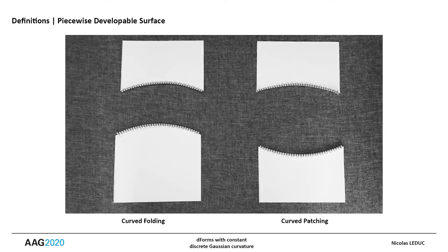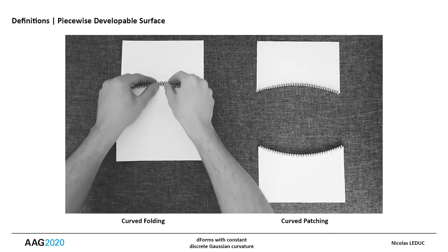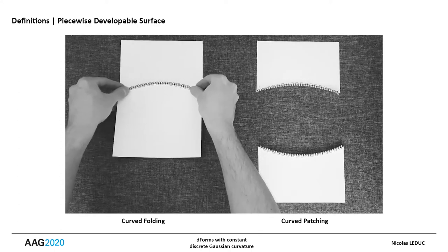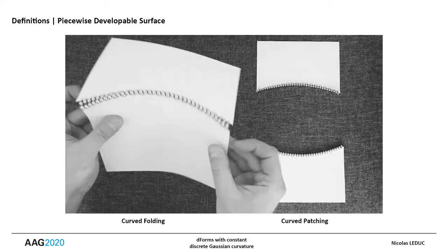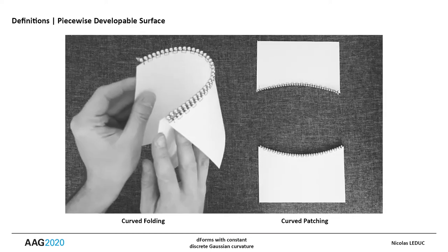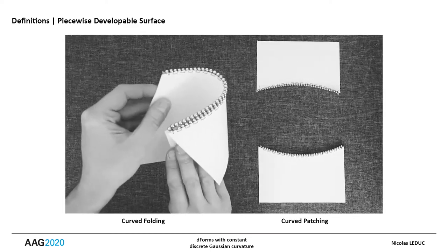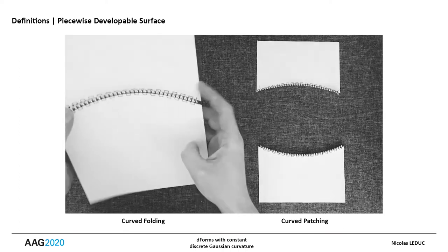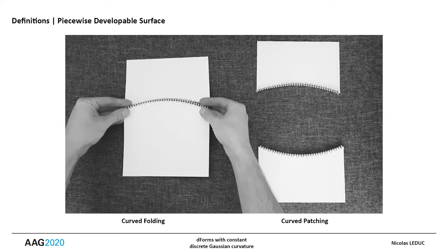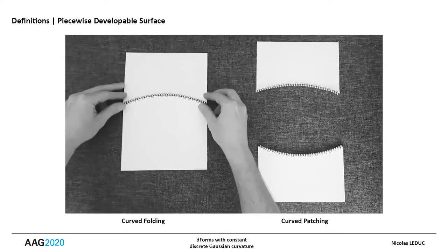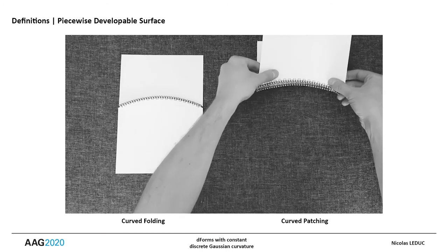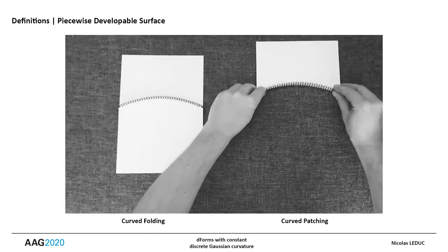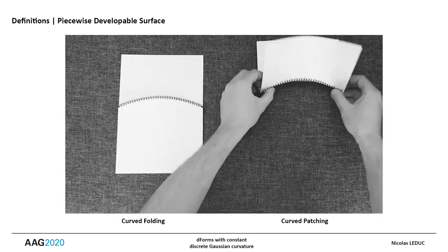The first one assembles two surfaces sharing the same unrolled edge, while in the second case the edges have different geometries while keeping identical lengths. In a sense, curved folding is a developable mechanism, since it can be completely unfolded.